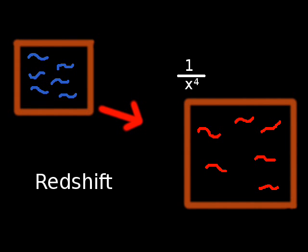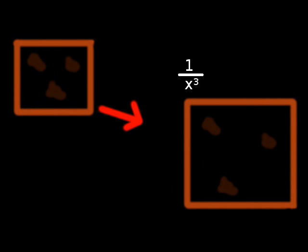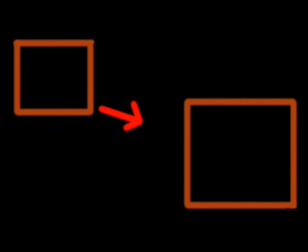Matter, however, goes as 1 over the change cubed, as matter doesn't change in time, just the spacing between the matter. However, vacuum energy density wouldn't change in time, but would be a constant.